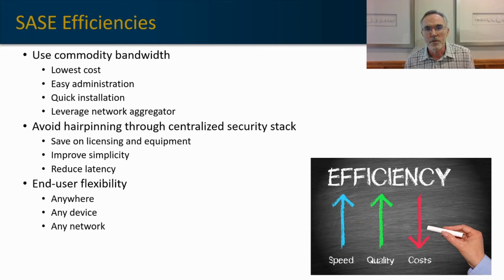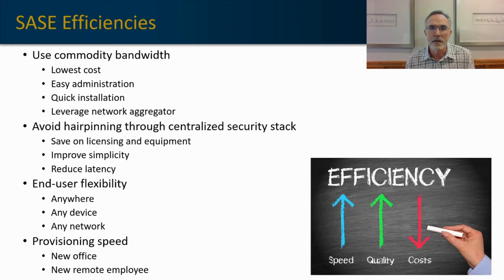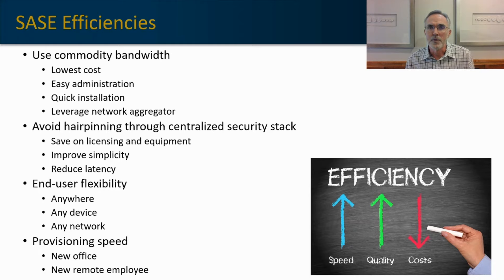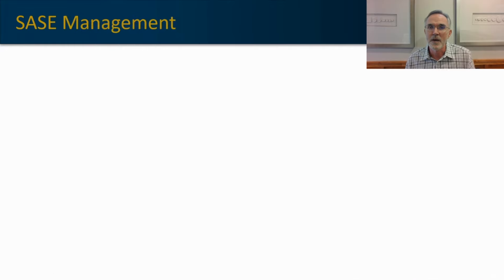SASE also increases end-user flexibility — they can use any device from any location off of any network without compromising security. And we're going to be able to turn up services at new locations very quickly, both from a network connectivity side — ordering broadband services that are typically installed within 10 days — and improving how we turn up services at both the branch and for the employee.